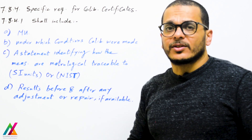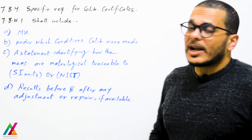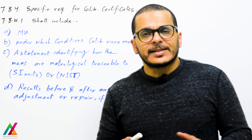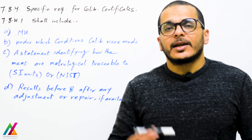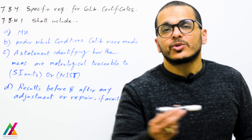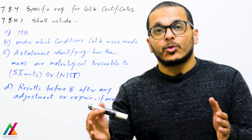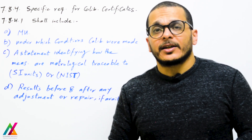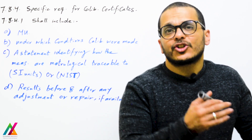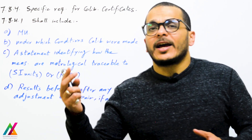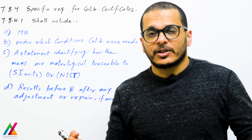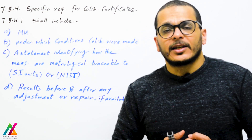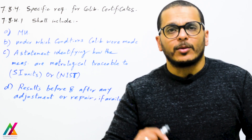Also in the calibration certificate: results before and after any adjustment or repair of the equipment, if available. For example, if calibration was performed and failed, then the equipment was fixed or repaired, there will be results before and after the repair, and after the repair the calibration passes. These before-and-after results shall be included in the calibration certificate if available.